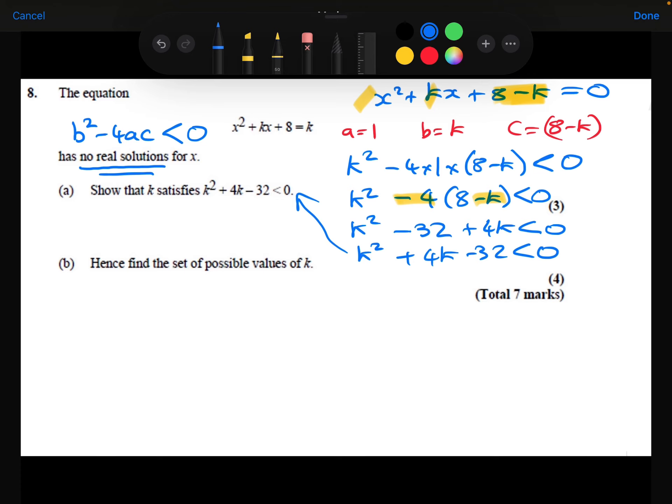Part b. Hence, find the set of possible values of k. So I want to solve this quadratic inequality. I'm going to start off by factorising to find the roots. So two numbers are multiplied to make minus 32 and add to make 4 are 8 and minus 4. So that's telling me that my roots are minus 8 and plus 4.